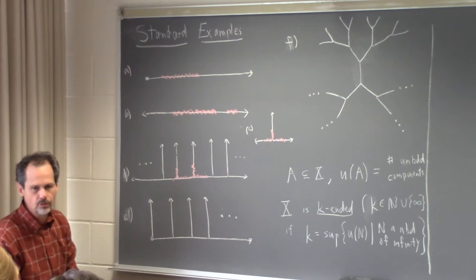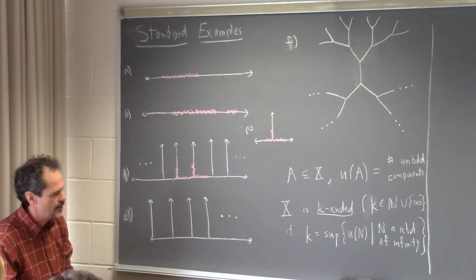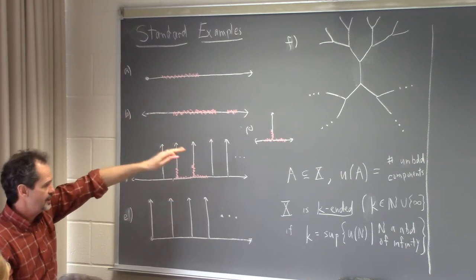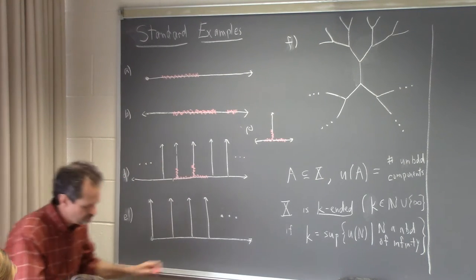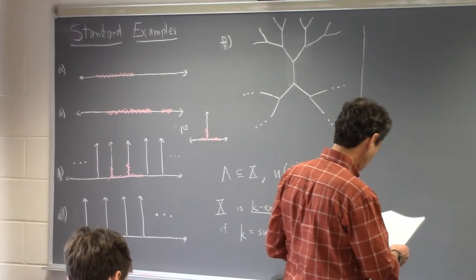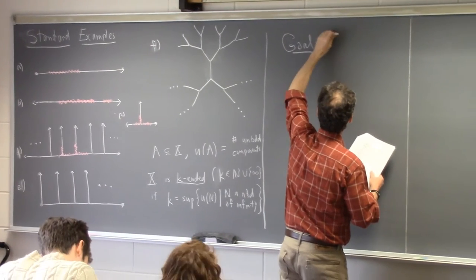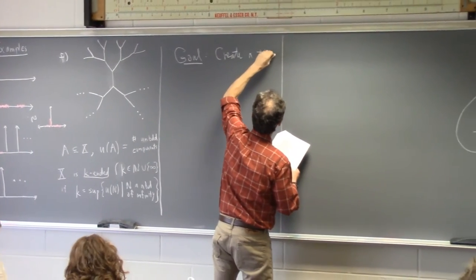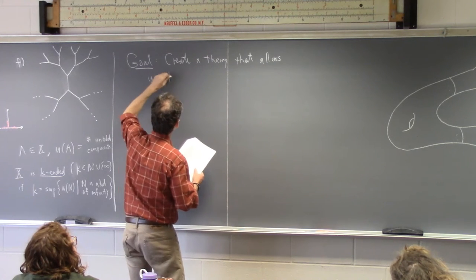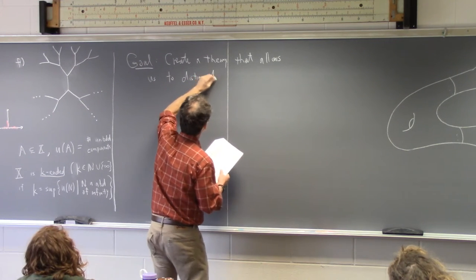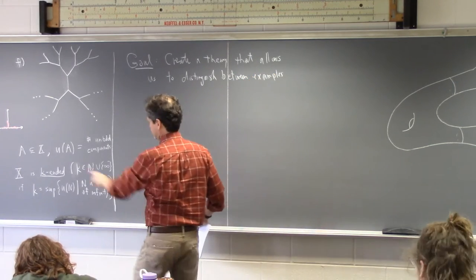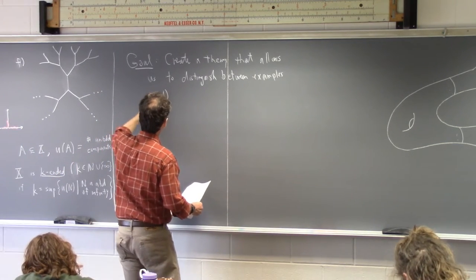I've sort of avoided the issue of what an end actually is. I've said it's k-ended if it has this property, but we've never really said what we mean by an end of a space. I want to take care of that and develop enough technology to distinguish the three infinite-ended spaces — examples D, E, and F. The goal is to create a theory that allows us to distinguish between these examples.